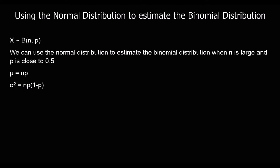In this video, we're going to look at using the normal distribution to estimate the binomial distribution. So if we've got a variable X which is distributed binomially with n bits of data and a probability of each one being a success of p, we can use the normal distribution to estimate the binomial distribution. That approximation is going to be better when n is large and when p is close to 0.5.